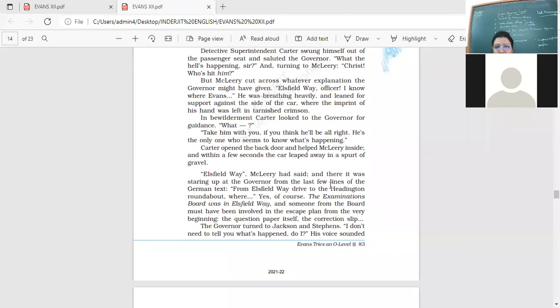Elsfield Way McCleary had said, and there it was staring up at the governor from the last few lines of the German text: from Elsfield Way drive to the Headington roundabout. Yes, of course, the examinations board was in Elsfield Way, and someone from the board must have been involved in the escape plan from the very beginning - the question paper itself, the correction slip. So what is he thinking? That someone from the examination board is involved: question paper, correction slip, phone call. He's just putting two and two together.